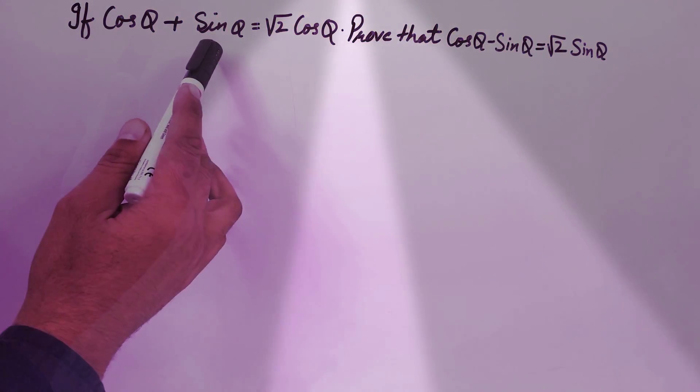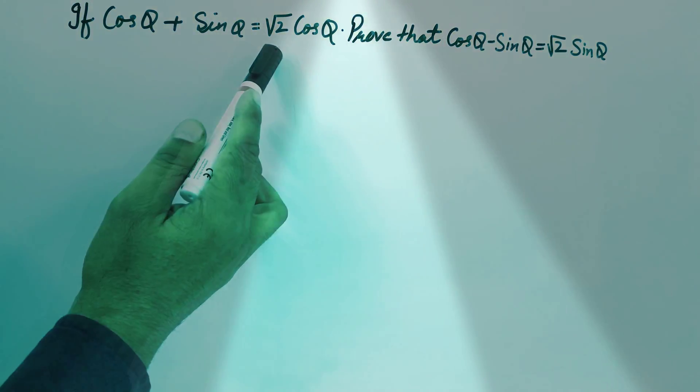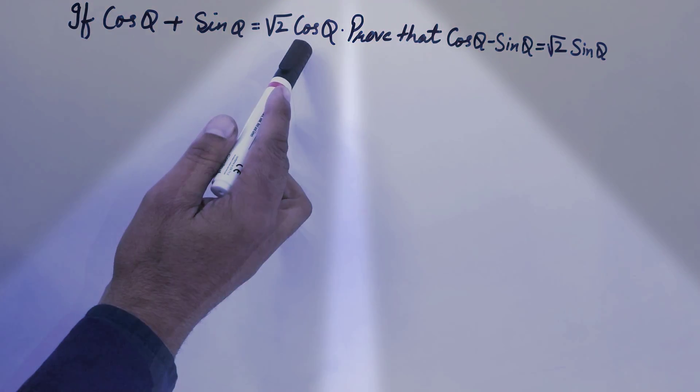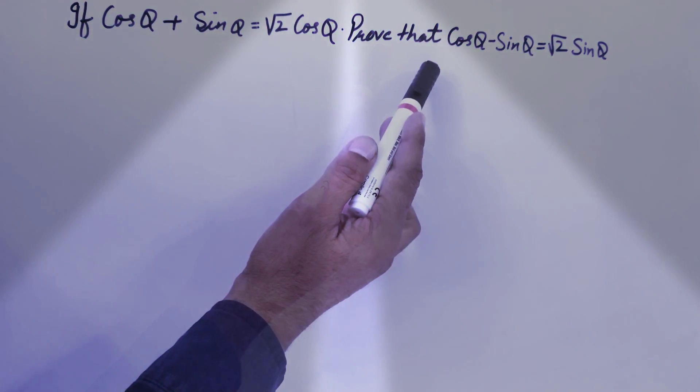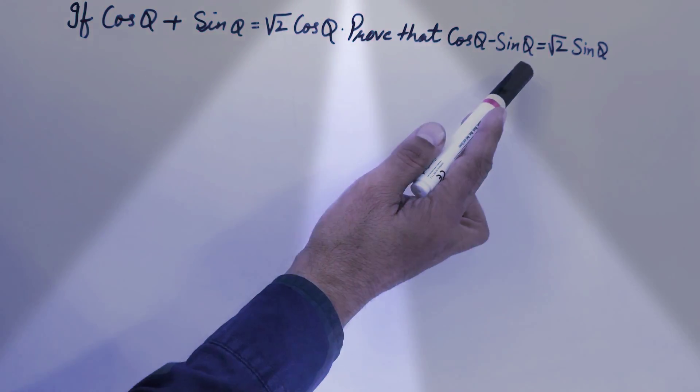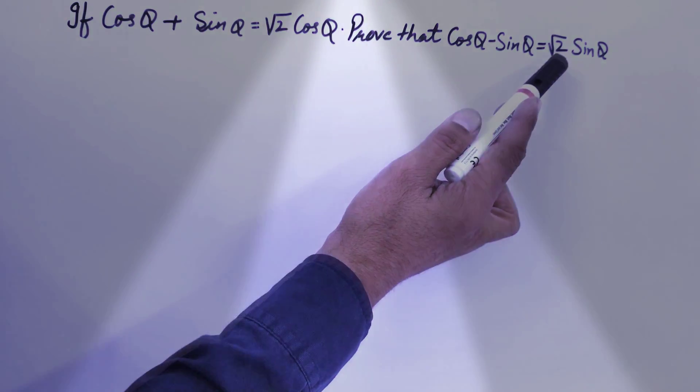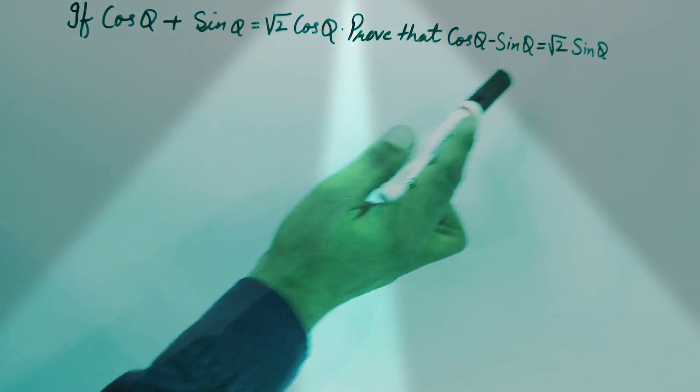Dear friends, welcome to my YouTube channel. Let's do this question, taken from Class 10 Chapter 8: Introduction to Trigonometry. The question is: if cos θ + sin θ = √2 cos θ, prove that cos θ - sin θ = √2 sin θ.